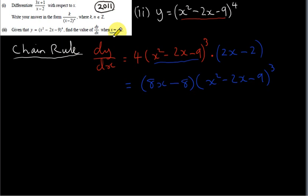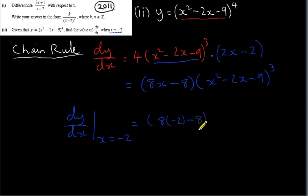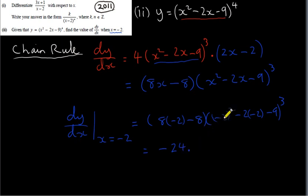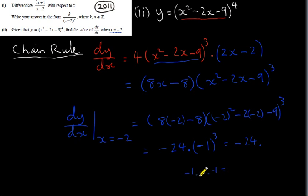We want the value of dy/dx when x equals minus 2. Substituting x equals minus 2: 8 times minus 2 is minus 16, and minus 16 minus 8 is minus 24. For the bracket: minus 2 squared is plus 4, and 4 plus 4 is 8, and 8 minus 9 is minus 1. So we have minus 1 to the power of 3: minus 1 times minus 1 is plus 1, times minus 1 again is minus 1. So our answer is minus 24 times minus 1, which is plus 24.